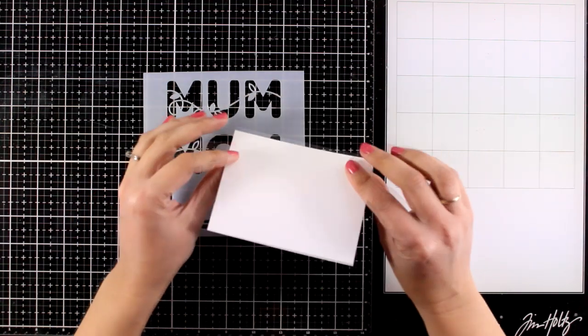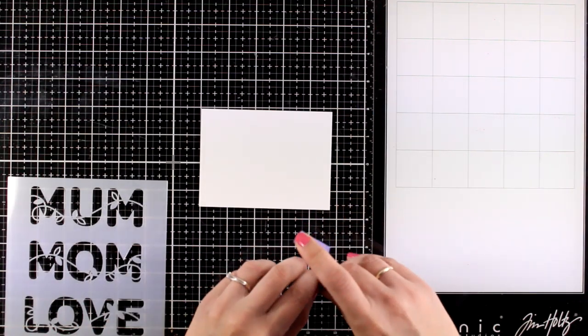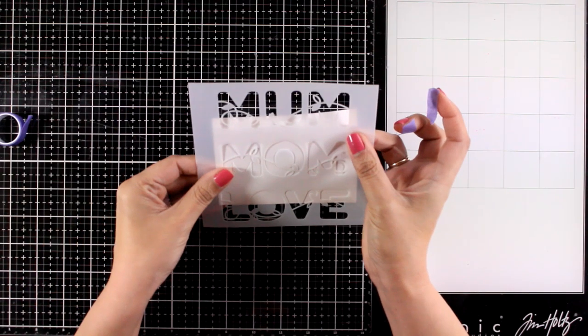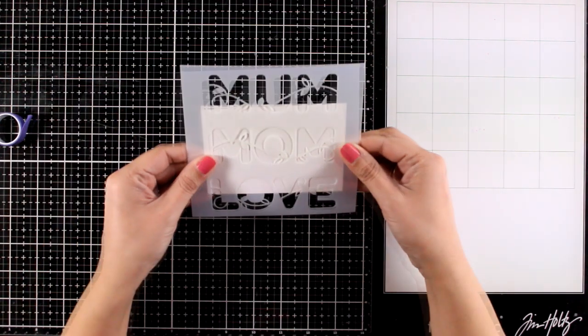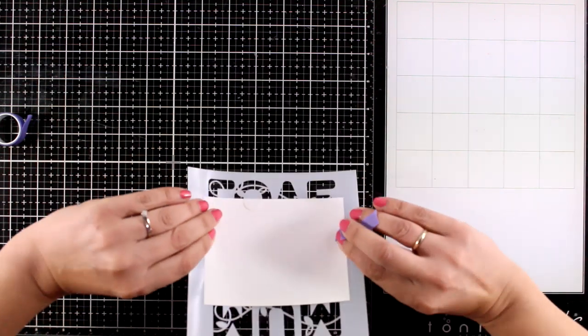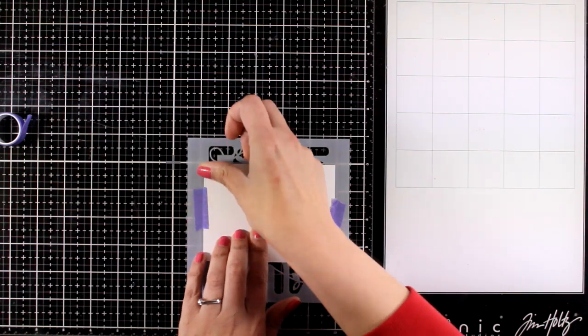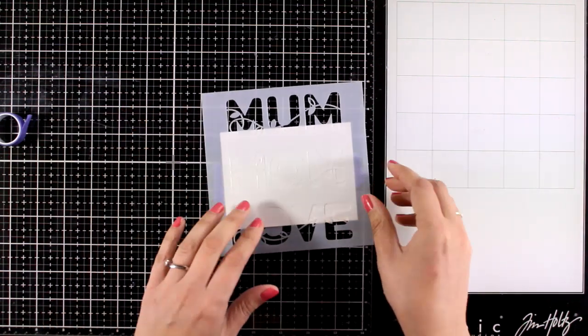This is the Moon Mom Love stencil. I have a piece of white cardstock here and I'm going to secure the stencil on top of it with some purple tape at the back. I want the word 'mom' to be centered on the white cardstock. I'm just eyeballing it, but of course you can use a ruler to make sure everything is super neat.